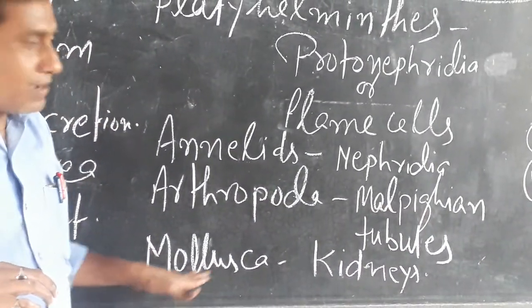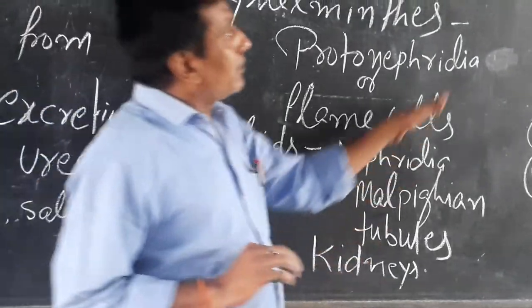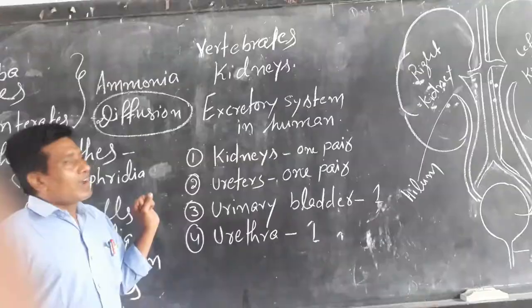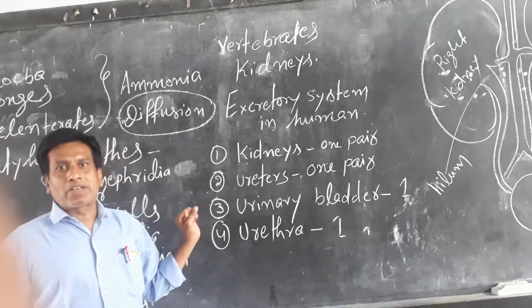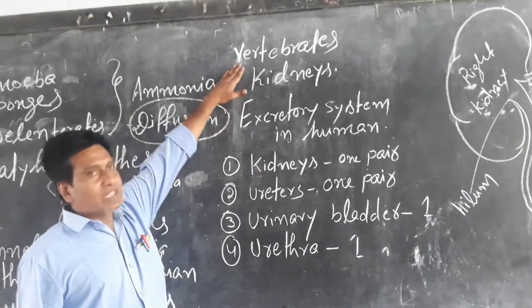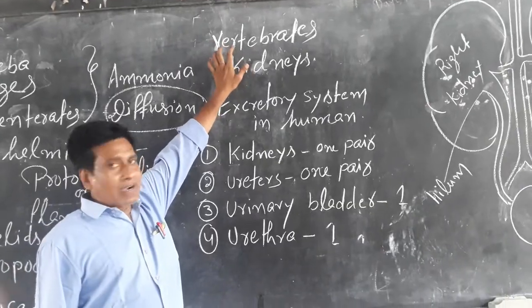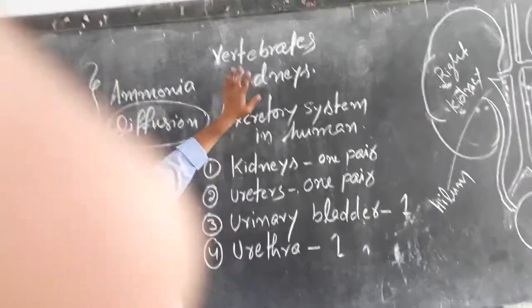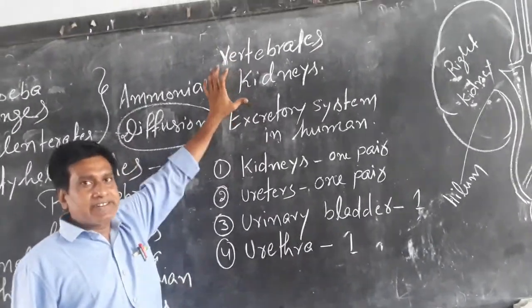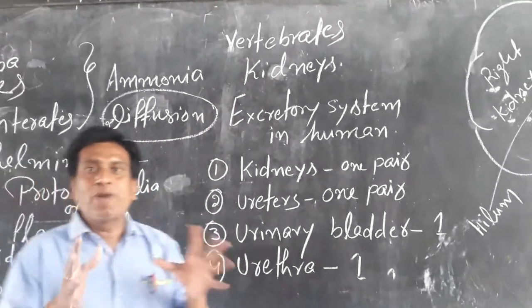Mollusks have kidneys. Similarly, the vertebrates — all higher groups of organisms and advanced organisms — belong to vertebrates. These advanced organisms have kidneys. The kidney is the excretory organ in humans as well.